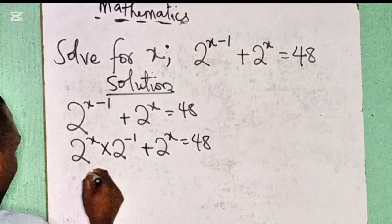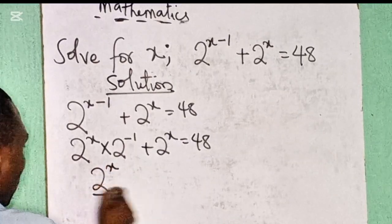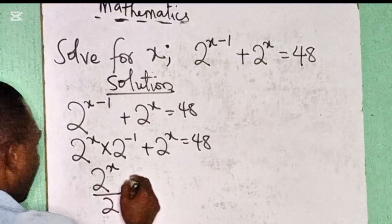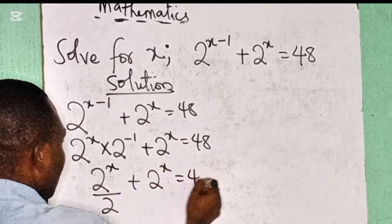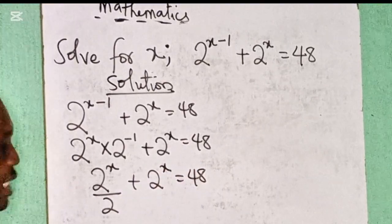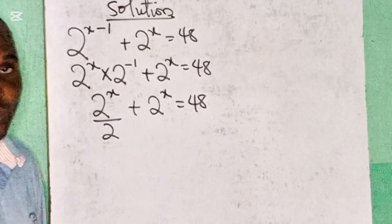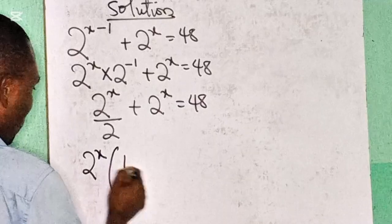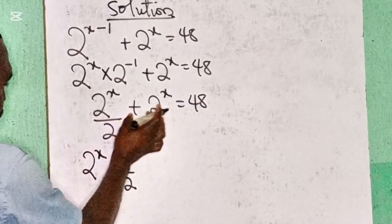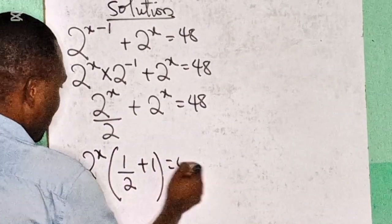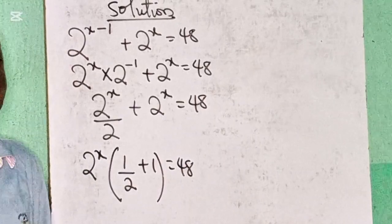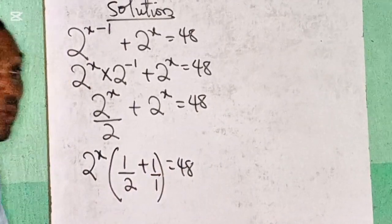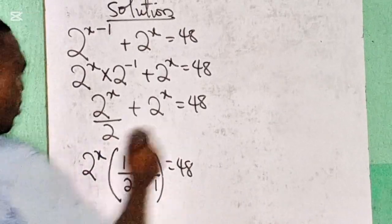This can be written as 2 raised to the power of x over 2, plus 2 raised to the power of x, equals 48. If you look at this, I'm having 2 raised to the power of x times 1 over 2, plus 1, equals 48. I can write this 1 as 1 over 1. So let me take the LCM of this.